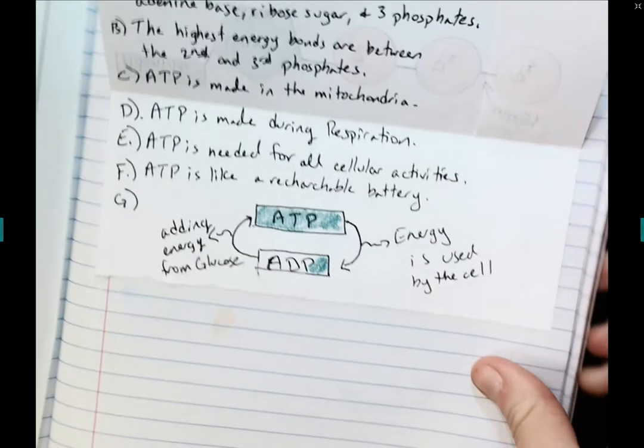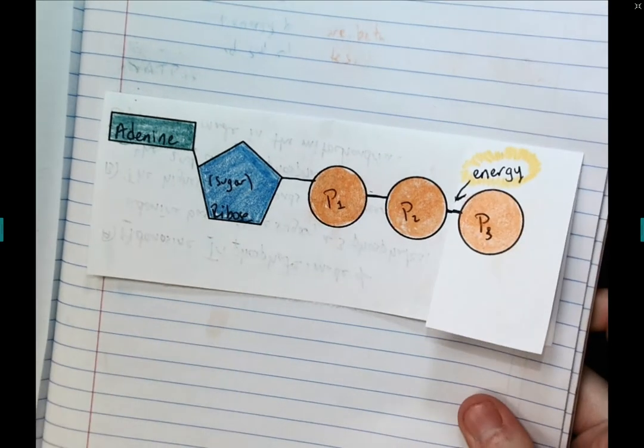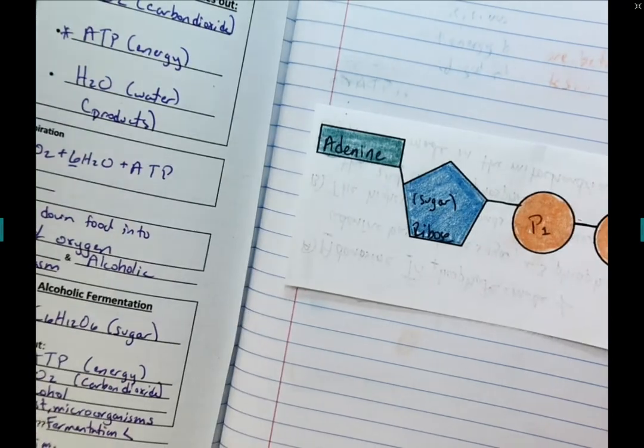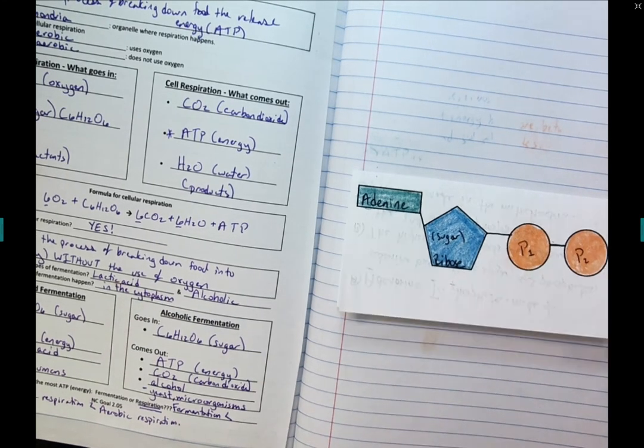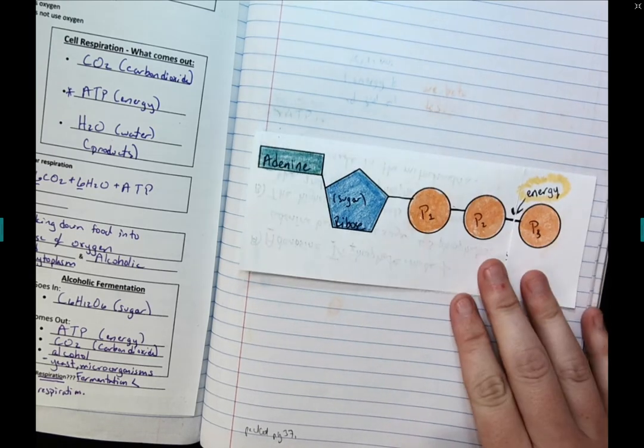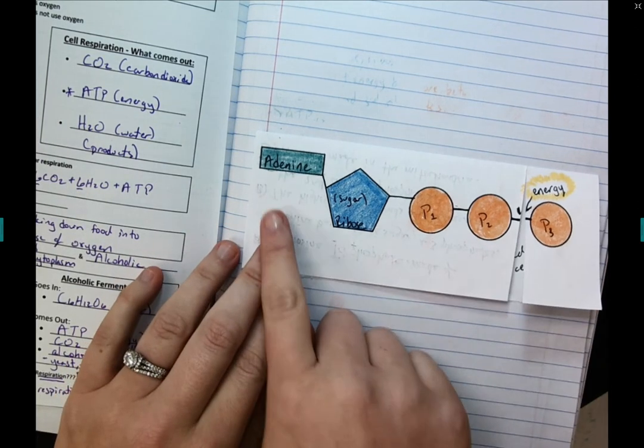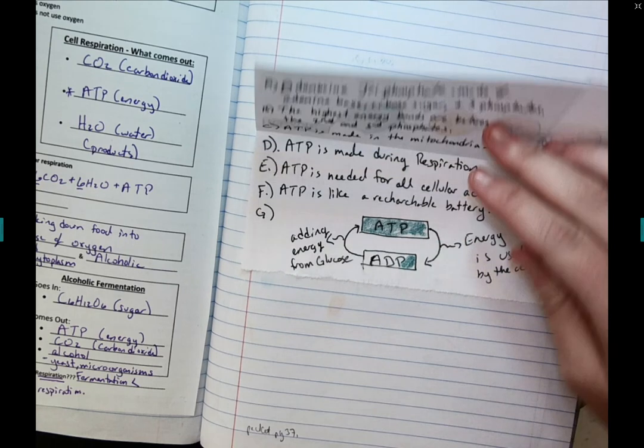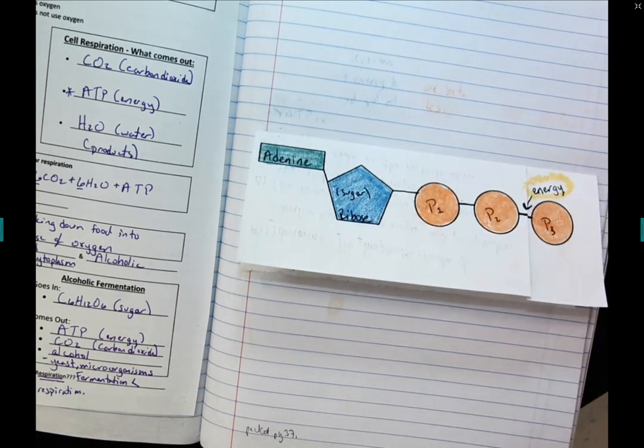Let's make sure, now that our foldable is complete, that we glue the foldable into our notebook. So I now have both my ATP notes right next to my cellular respiration notes in my notebook. Okay, that's it for today. If you have any questions about the shape or structure of ATP or how ATP is made or used, please be sure to let me know.